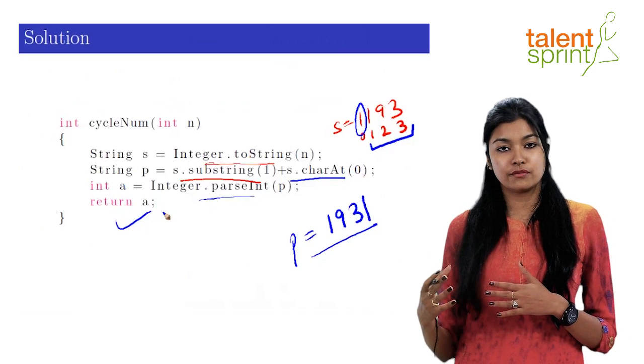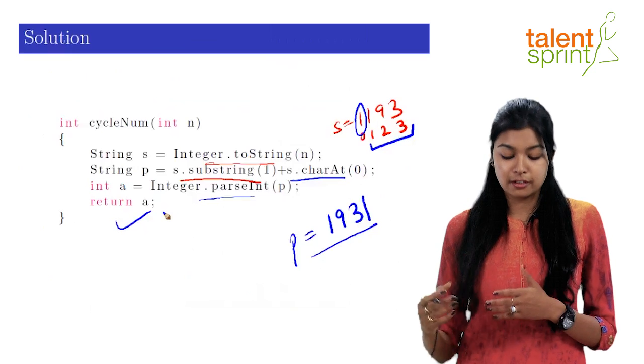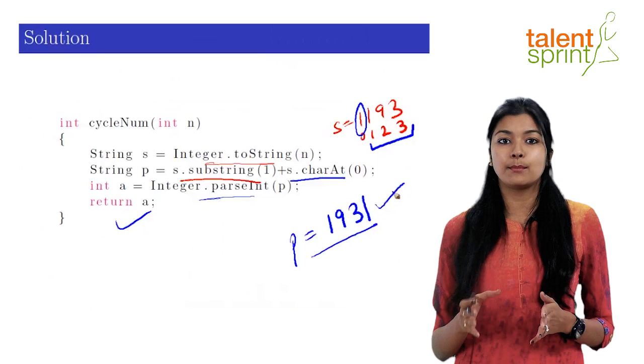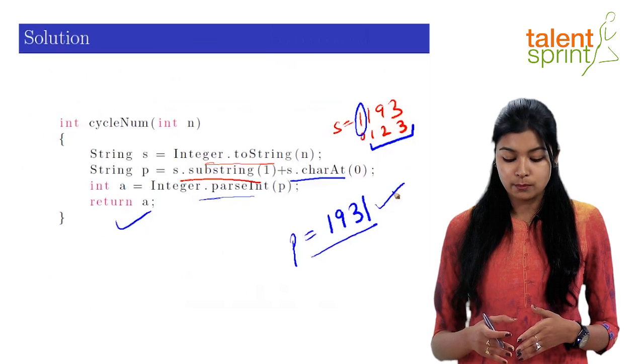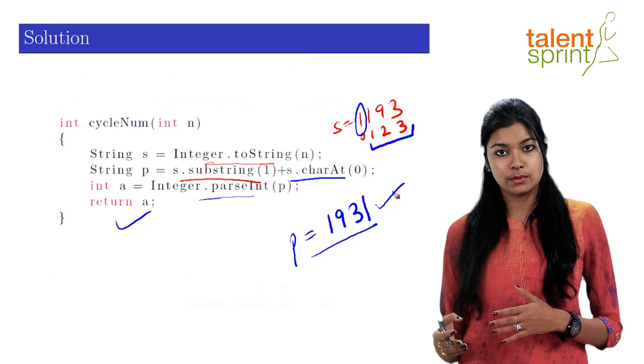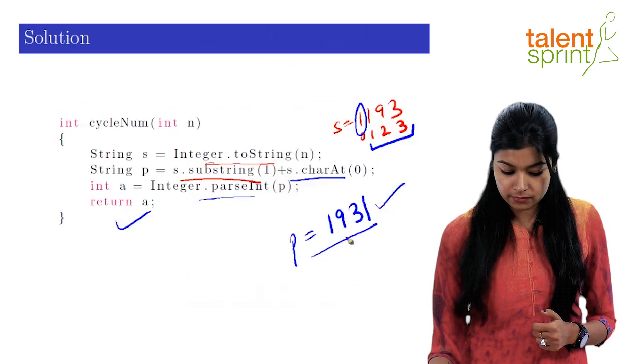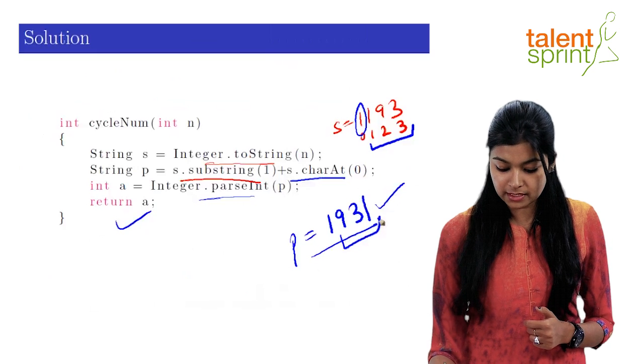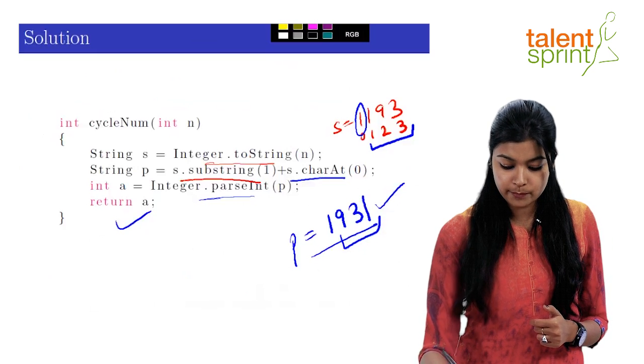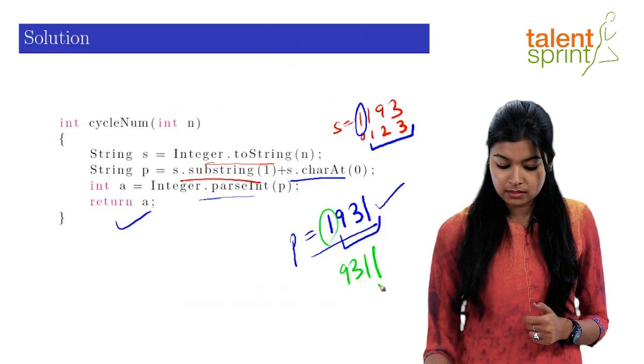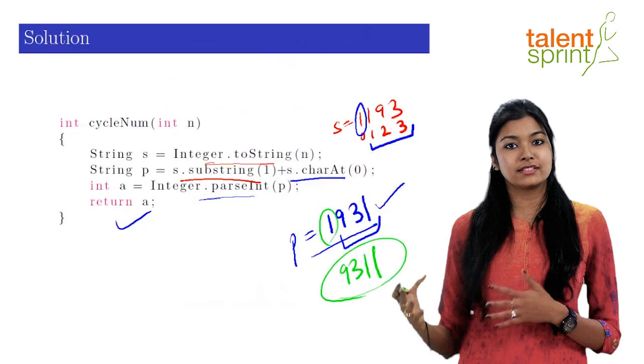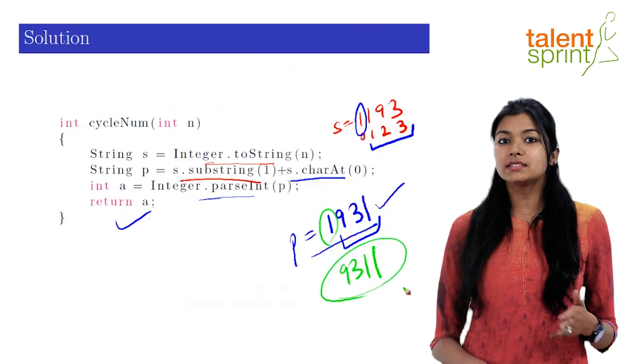Now, again, in our next iteration of the while loop, we'll check if this particular number is a prime or not, and then call the circulate function on this number, which will again convert 1931 to a string. Then we'll add the substring at the index 1, which is 931, and charAt(0), which is 1, and give this number for our next iteration. So like this will circulate.